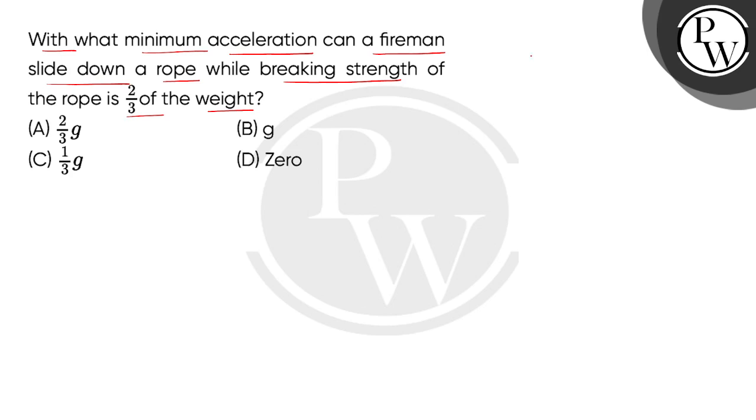We need to tell that a fireman, so let's understand it from the diagram. Let this be the rigid support and this is our rope, and this is a fireman sliding down.